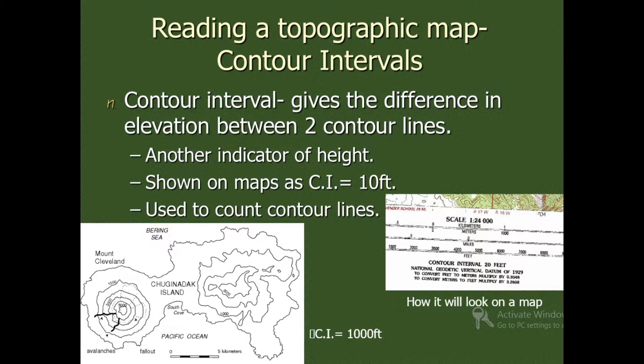Contour intervals give the difference in the elevation between two contour lines, another indicator of the height shown on the map. It is CI, used to count contour lines.